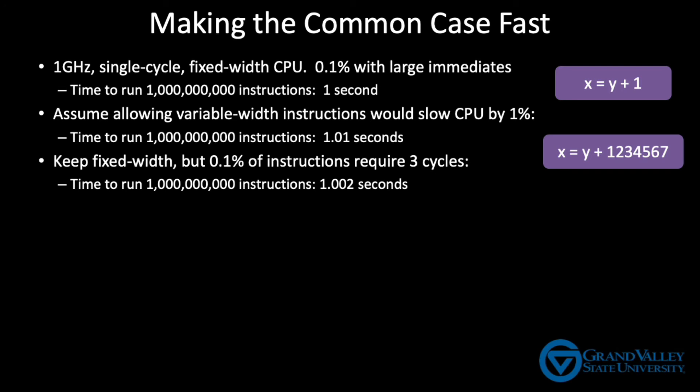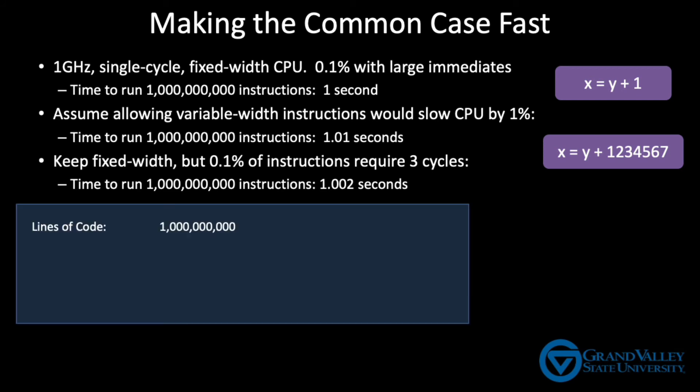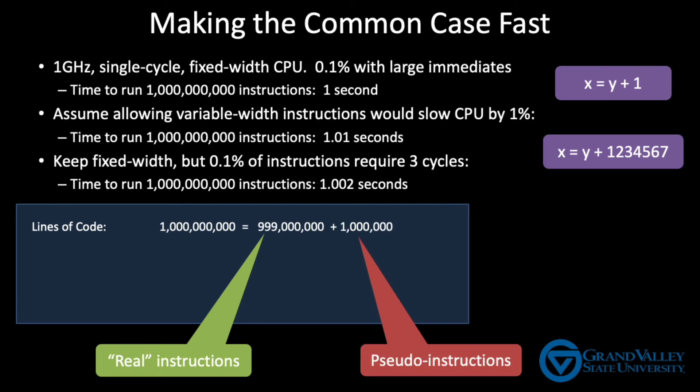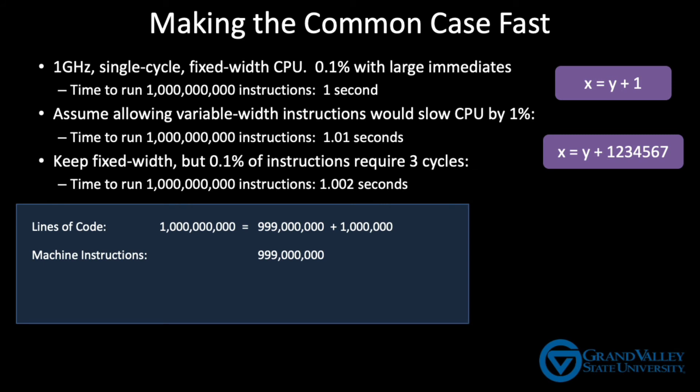Let me explain more carefully where I got the 1.002 second figure from. I assume that one-tenth of one percent of the one billion instructions have large immediate values and must be replaced by pseudo instructions. That means there are 999 million real instructions and 1 million pseudo instructions. Each of the 999 million real instructions corresponds to exactly one line of machine code and requires one cycle to run. The remaining 1 million pseudo instructions correspond to three lines of machine code each for a total of 3 million additional machine instructions. This produces a total of 1 billion 2 million machine instructions. If we run 1 billion 2 million cycles at 1 billion cycles per second, we get an execution time of 1.002 seconds.